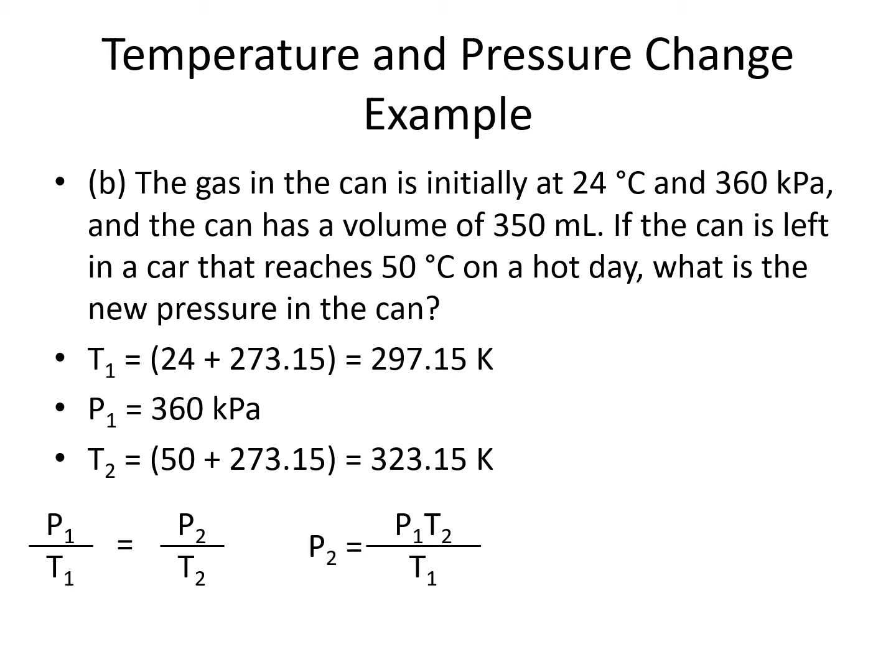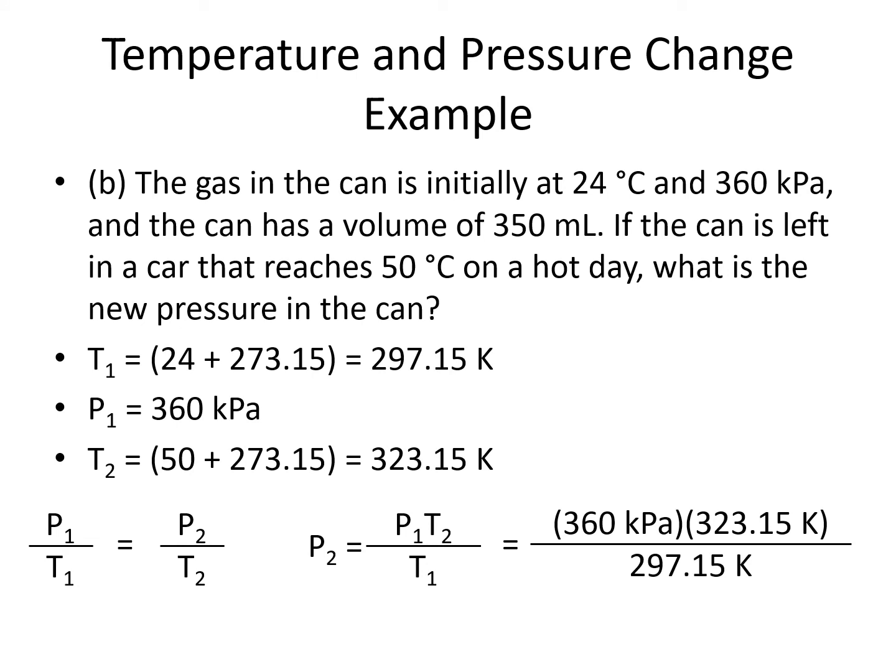Now we can plug in our actual values. P1 and T2 go on the top and T1 goes on the bottom, and we come out with 391 kilopascals. The units are kilopascals because that is the same as the units for P1, and Kelvin cancels out in the equation. For all of our gas laws, we should be able to make sense of our answer based on the relationships we know. In this problem, the temperature increases from 24 to 50 degrees Celsius, and from Amontons' law we know the pressure should also go up. It does — it goes up from 360 to 391 kilopascals.